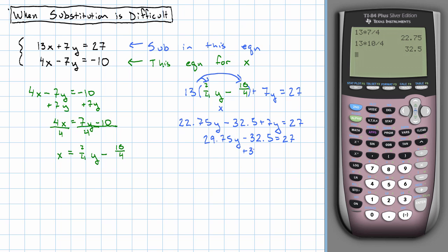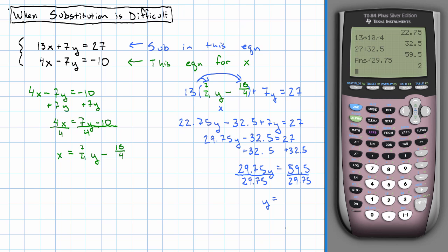Add 32.5 to both sides. 27 plus 32.5 is 59.5. Divide both sides by 29.75, and we'll get y equals 2.